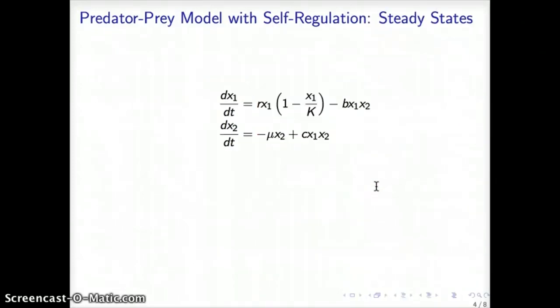What we will discuss next is the dynamic behavior, qualitative behavior of this new model. We have just made a slight modification to incorporate self-regulation in the equations, self-regulation of the population of prey. Now we have a new set of equations.